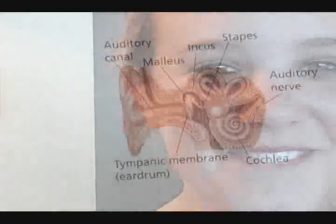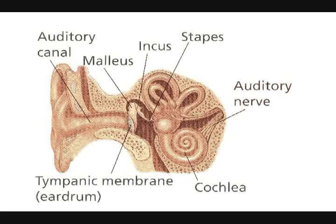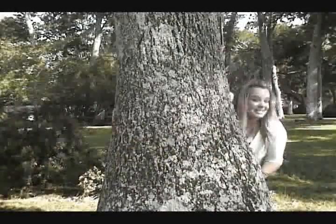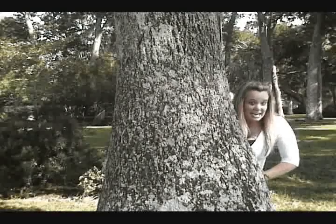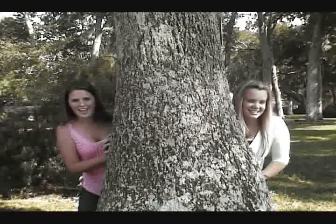The human ear is a detector that receives pressure waves and converts them to electrical impulses. The ear detects sound waves over a wide range of frequencies and is sensitive to an enormous range of amplitudes. Human hearing can distinguish many different qualities of sound. Two factors that affect how sound is perceived are pitch and loudness. Pitch depends on the frequency of the vibration, while loudness depends primarily on the amplitude of the pressure wave.